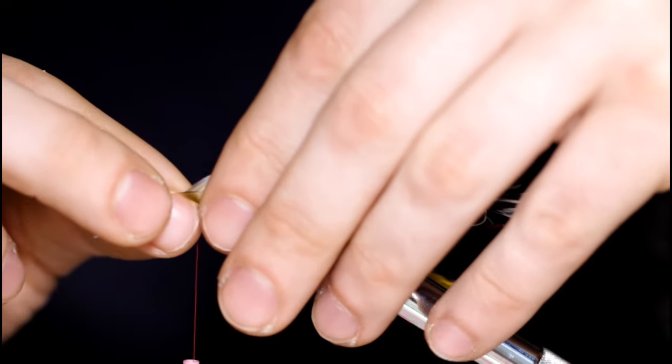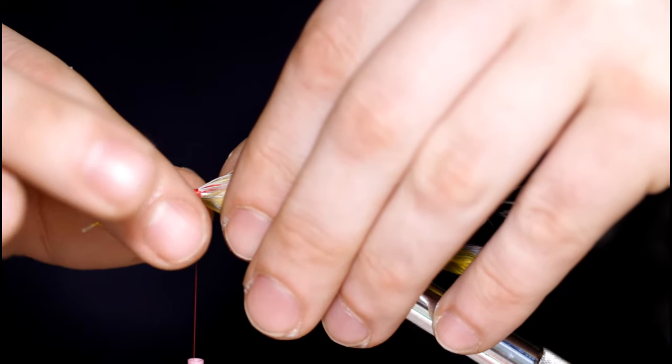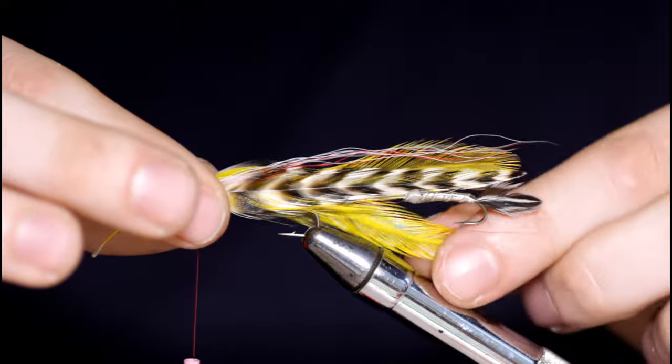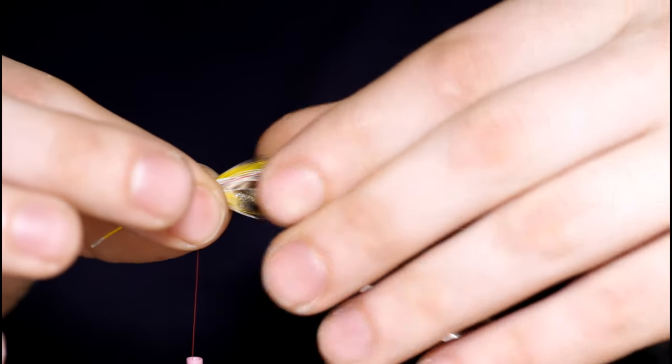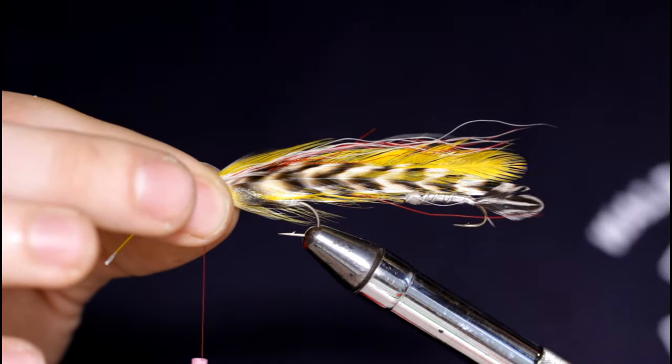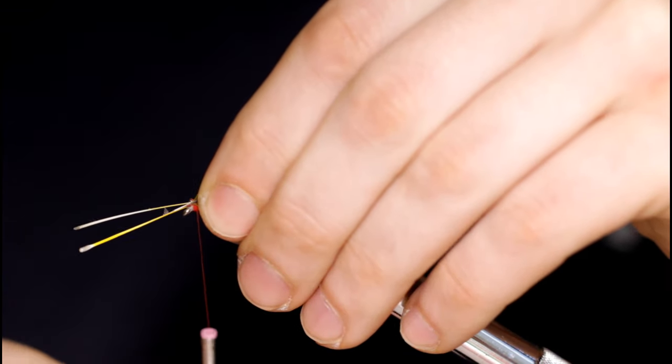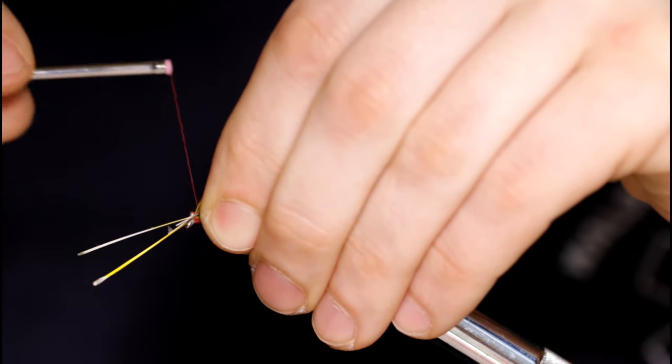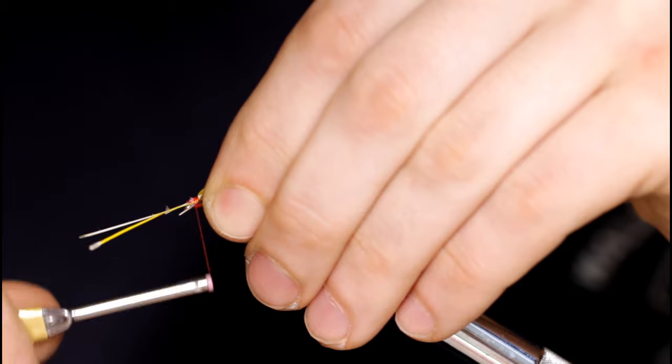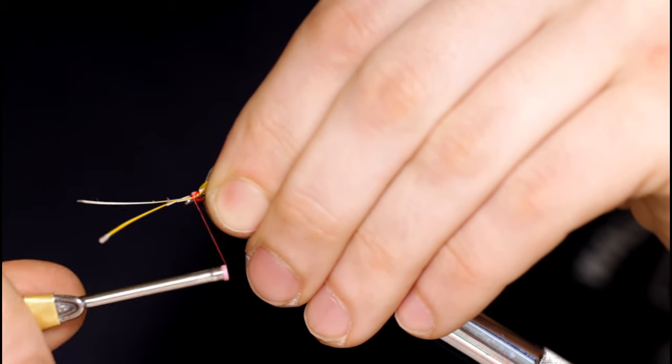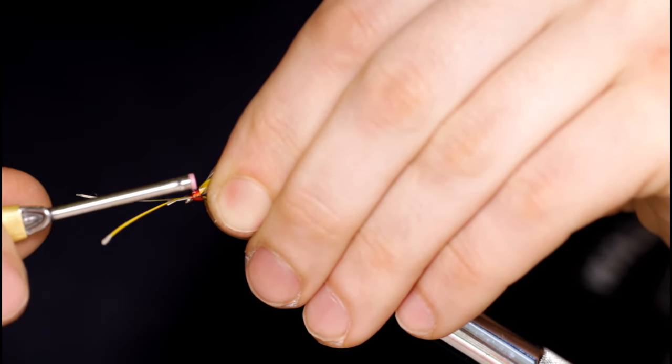I'm going to come in and tie them in at the same time. So I'll check the length one final time before I tie it in. That looks good. So I'll pinch it just behind the head, take a few turns forward. And I'm getting awful close to this hook eye. It's worth mentioning that there's still a collar to be tied in, so make sure you leave plenty of room for that.